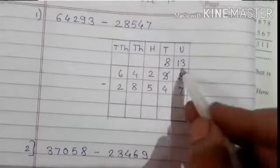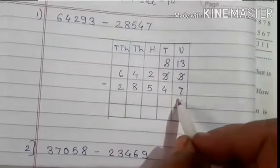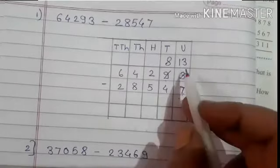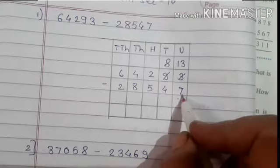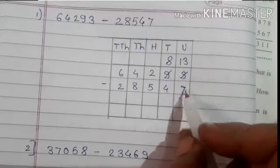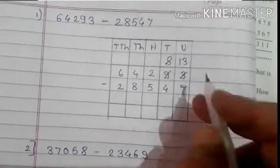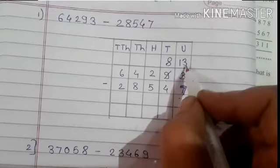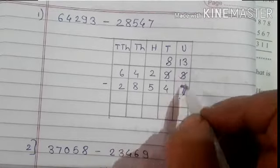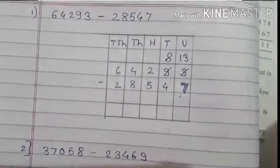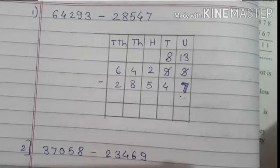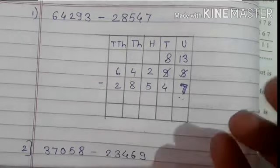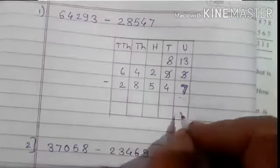Now do 13 minus 7. From 13 you have to subtract 7. Keep 7 in your mind and count the figures up to 13 after 7: 8, 9, 10, 11, 12, 13 — that's 6. So the answer is 6.